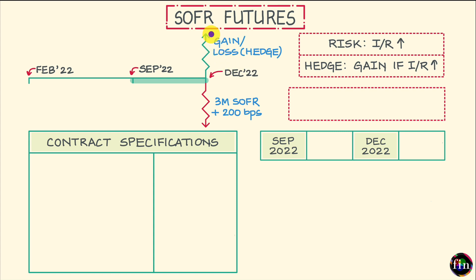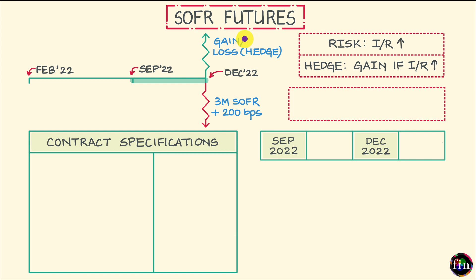If I were to go to CME, what I'll observe is that there are actually two types of SOFR futures that trade on this exchange. These are: number one, one-month SOFR futures also referred to as SR1, and number two, three-month SOFR futures also referred to as SR3.